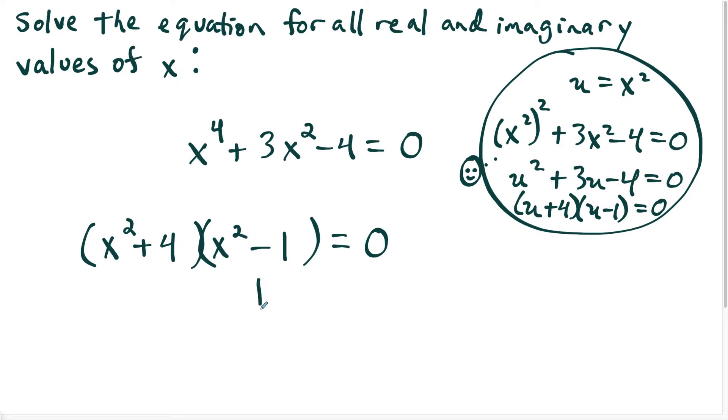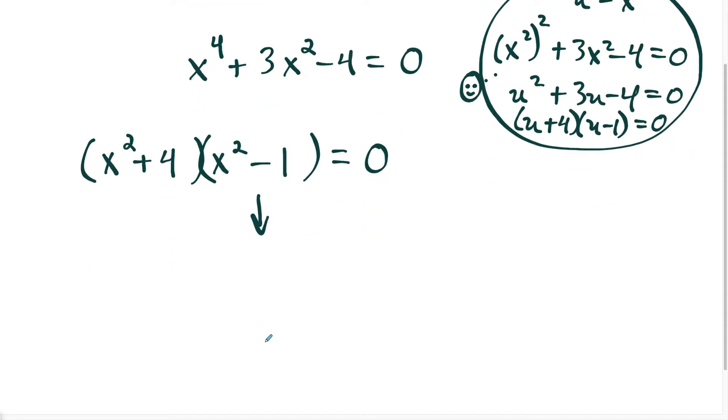Now I'm going to deal with this one first. The x squared minus one is the easier one to solve for because x squared minus one is equal to zero. When we have x plus one times x minus one equal to zero, we have a difference of two squares so we could factor it nicely. And this is going to give us two values of x, we're going to have x equals plus or minus one.